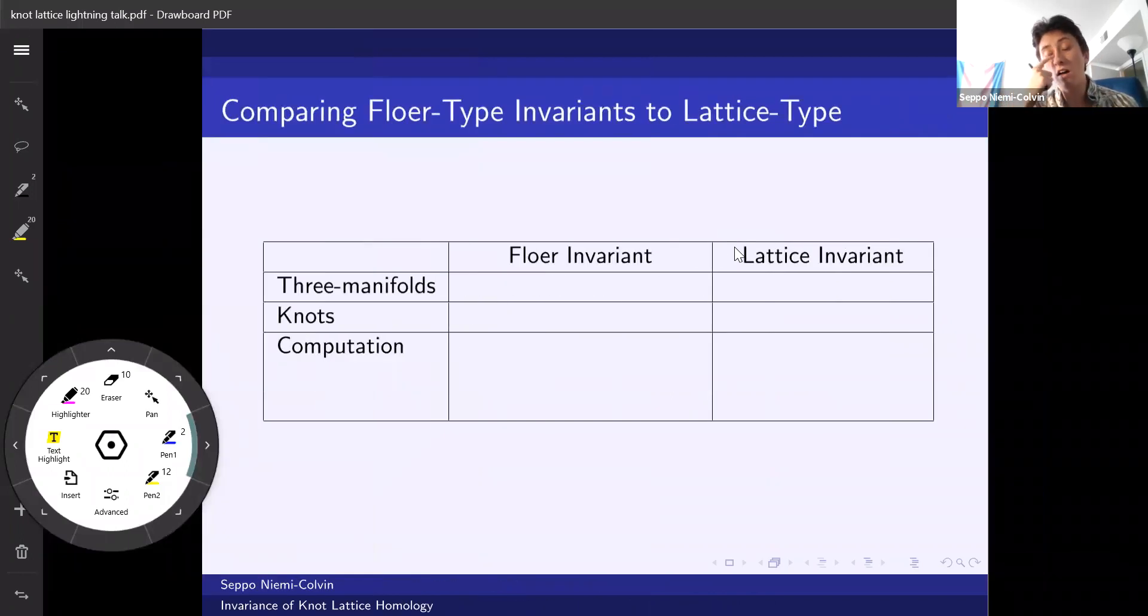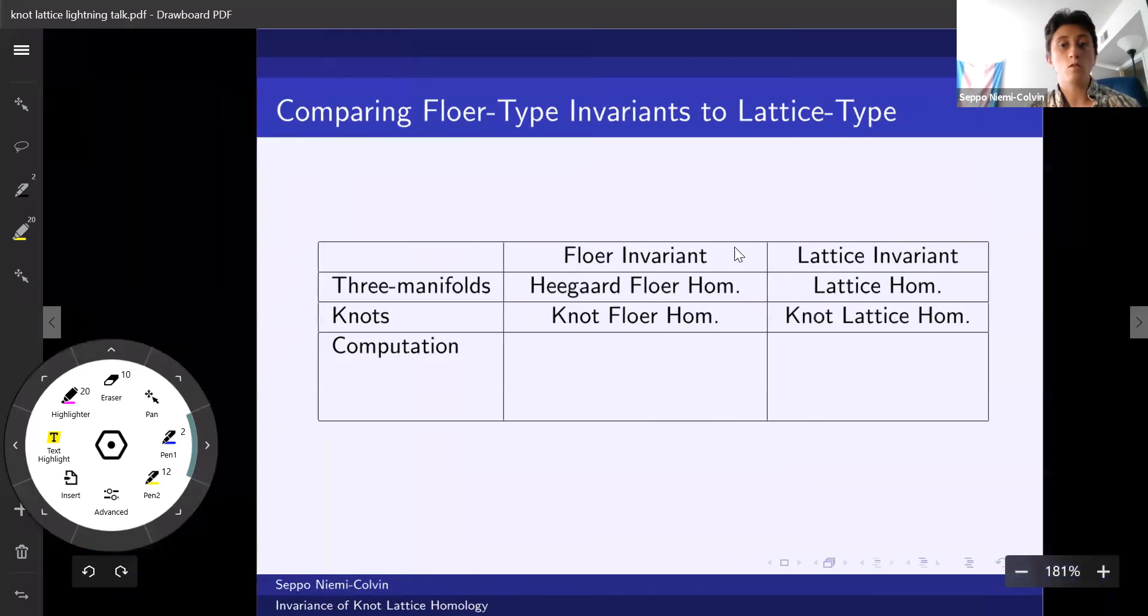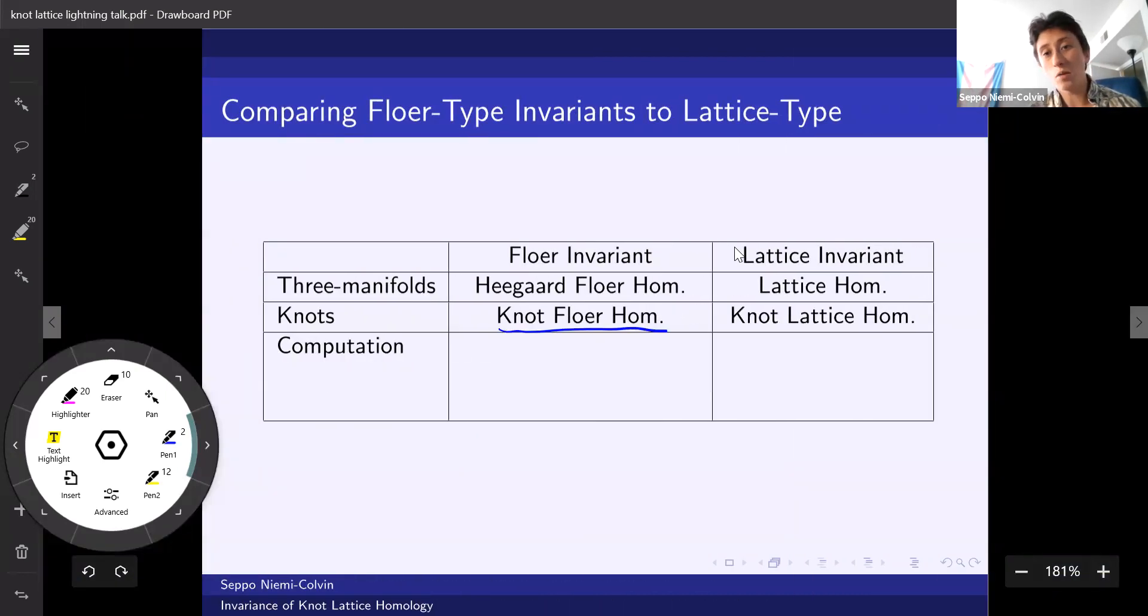So we care about knot-lattice homology because of how it fits into a broader picture with Floer-type invariants. In particular, for three-manifolds, we have Heegaard-Floer homology, and then on the lattice side, we just have lattice homology. For knots, we might care about knot-Floer homology, which knot-lattice homology plays a similar role to building off of lattice homology.